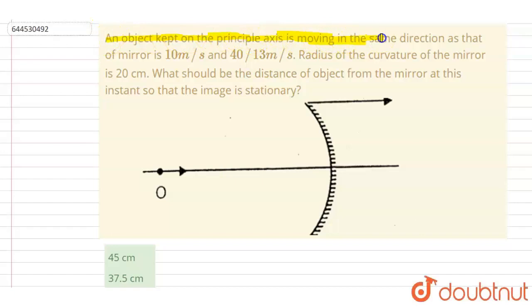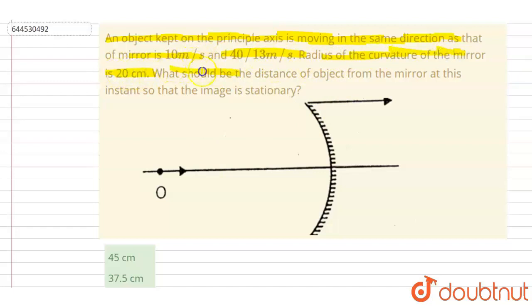Hello everyone. An object kept on the principal axis is moving in the same direction as that of the mirror. The velocities are 10 meters per second and 40/13 meters per second in the direction shown. The object has 10 meters per second, the mirror has 40/13 meters per second. The radius of curvature of the mirror is 20 centimeters. What should be the distance of the object from the mirror at this instance so that the image is stationary?